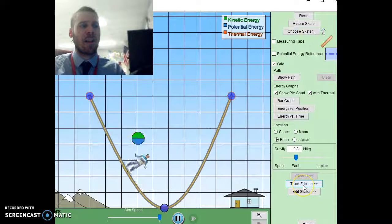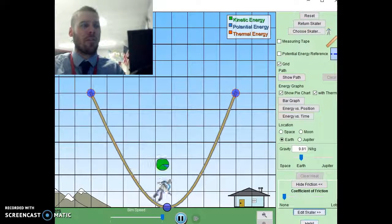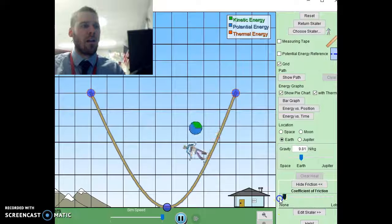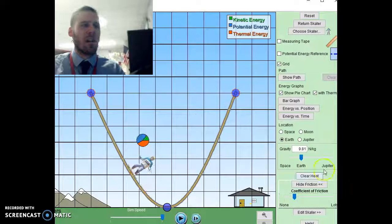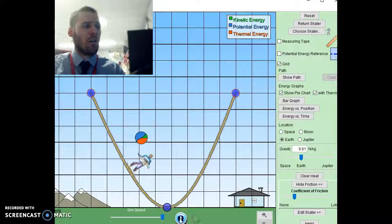Another option that you'll need to do for this assignment is increase the coefficient of friction. No friction would be 0%, 25% approximately a quarter, and you can slowly see the amount of energy being transferred into thermal and eventually the skater is going to come to a stop.